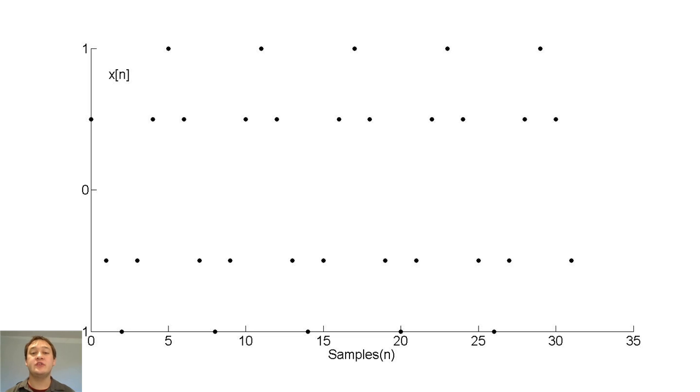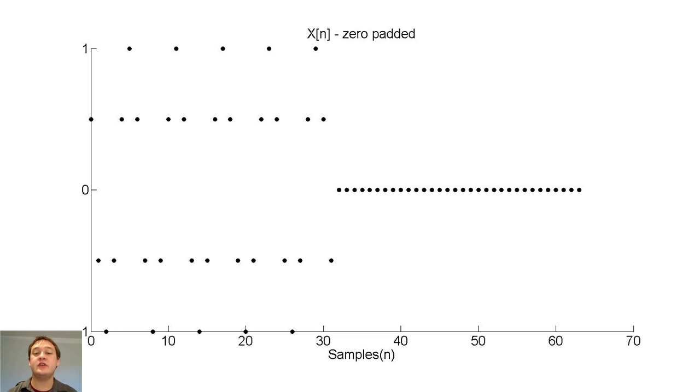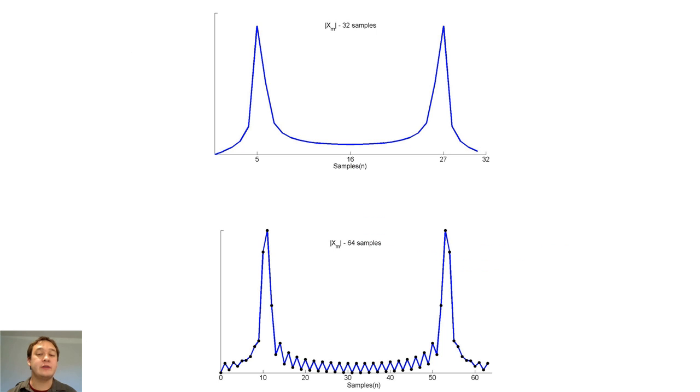What would happen if we reintroduced some of the zero samples from outside of our window? Let's investigate this question by re-adding 32 zero samples after our x of n. Adding zeros to x of n is called zero padding. The 64 sample zero padded DFT of this function would look like the bottom graph. Notice that the zero padded DFT does not look more like a set of impulse functions than the original 32 sample DFT.